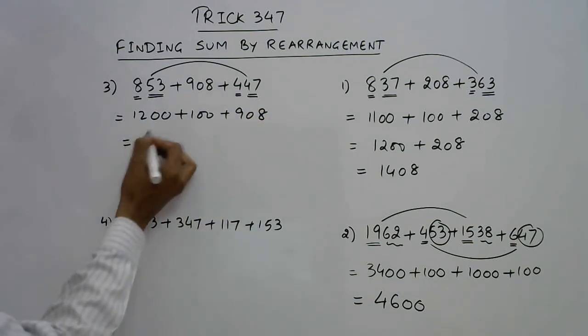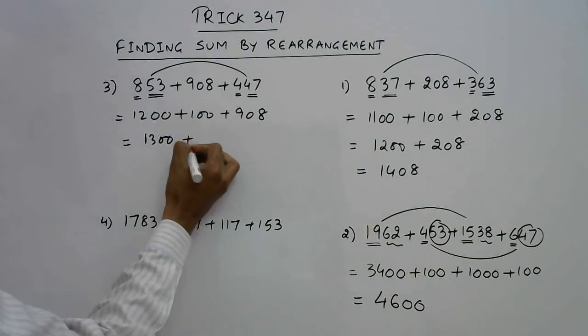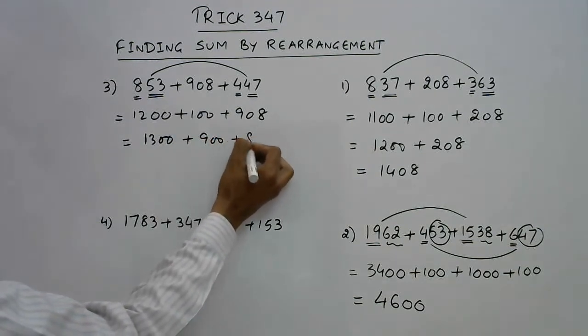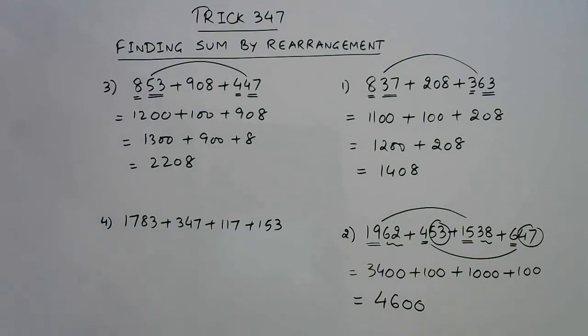So 1300 plus 900 plus 8, so 2208 is the answer. This is the sum of these three numbers.